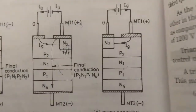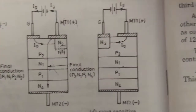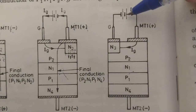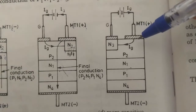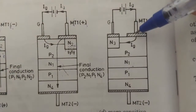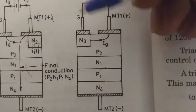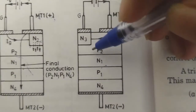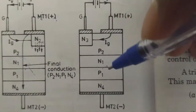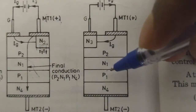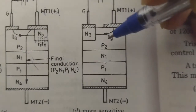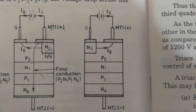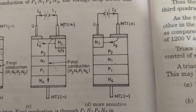The fourth and final mode of the turn-on process is slightly different from the third mode. The gate is now negative, so the direction of the gate current changes. Similarly, region N3 will inject electrons into the P region, leading to the breakdown of the reverse biased junction. The current will flow through P2, N1, P1, and N4.